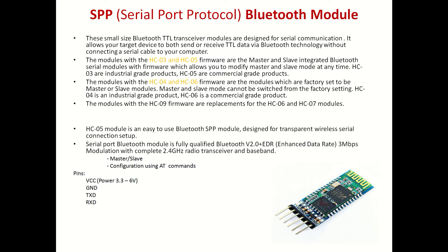For Bluetooth, we are using the HC series device because it has SPP protocol on the controller itself. The family is HC03, HC05, HC06, HC07, and so on. HC03 and HC05 can be configured as master or slave through programming modes. HC03 is industrial grade and HC05 is commercial grade. HC06 and HC04 are factory-programmed modes — either master or slave — so you cannot change the mode through your program. HC04 is industrial grade and HC06 is commercial grade.